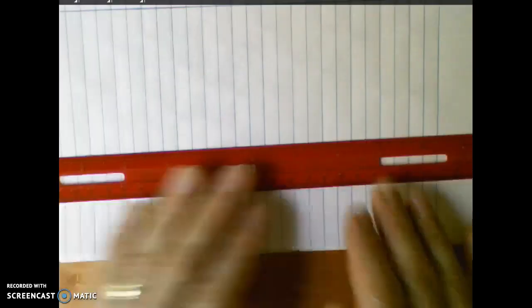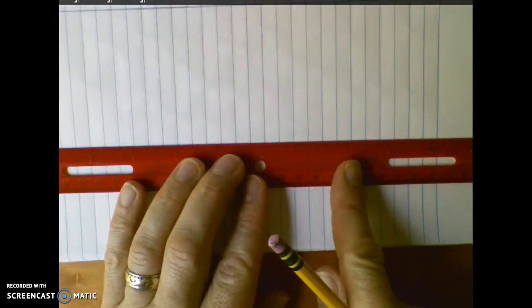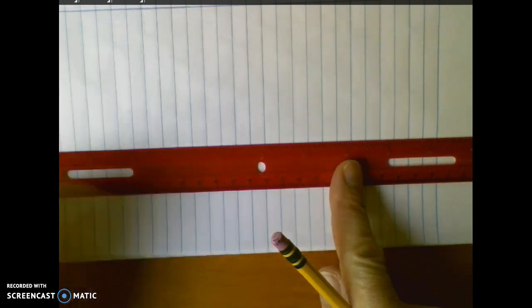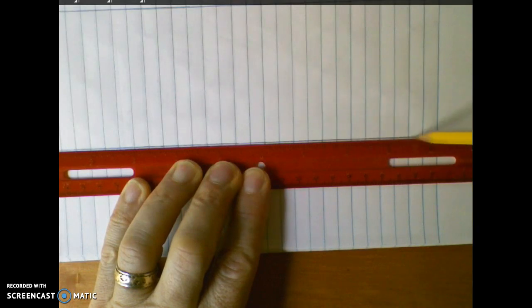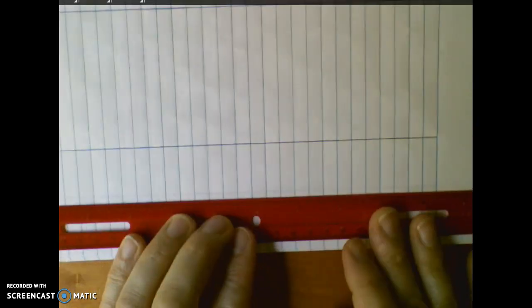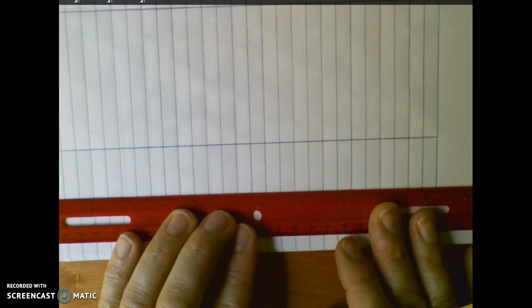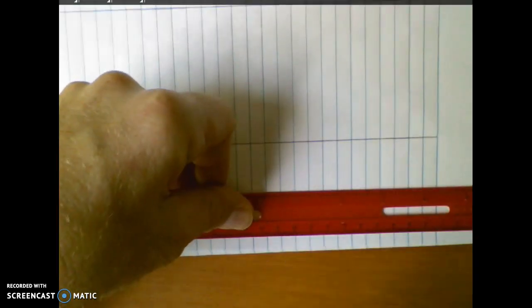Now moving to the bottom of the page, you're going to place the ruler just above that red line using it as a guide and again draw horizontal lines, one above and one below.